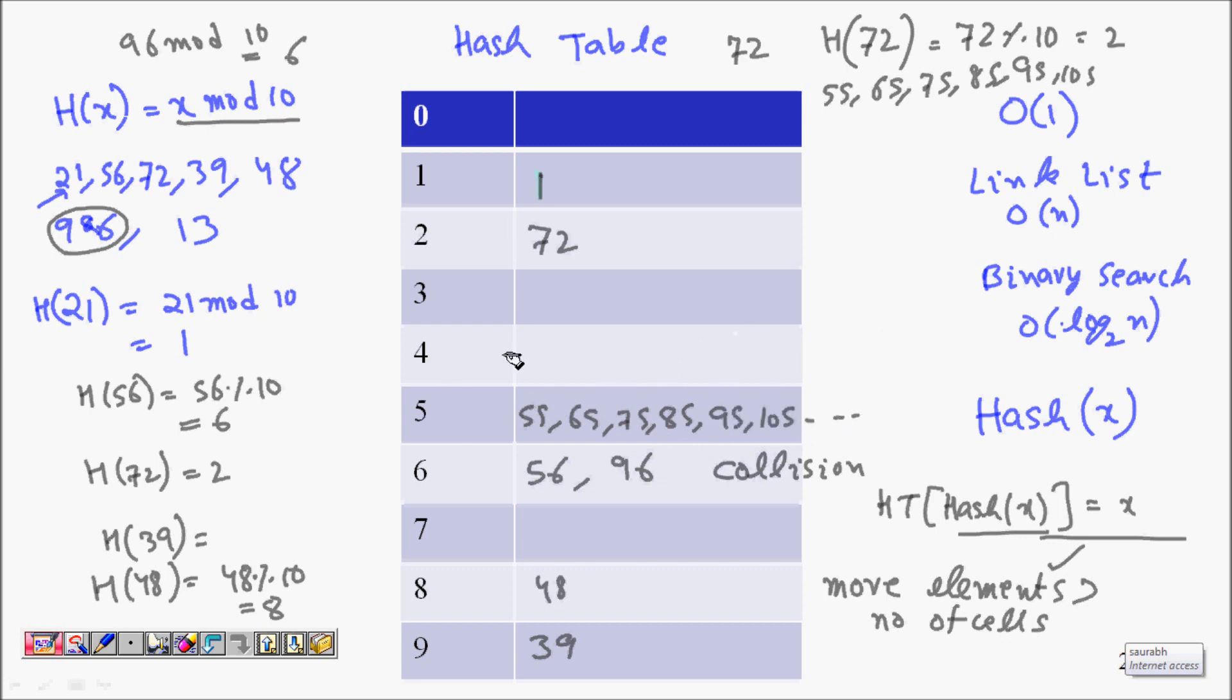So one thing we know that hash table can search in O(1) time, and then it can insert in O(1) time. In fact, if I want to delete 72, H(72) is 2, it was there in cell number 2, I can delete it. So it's O(1). But every good thing has some problems with it also. This fast thing, or optimized search, or one time search, has some problems. What happens when you have collisions? So you have to deal with collisions in this one.